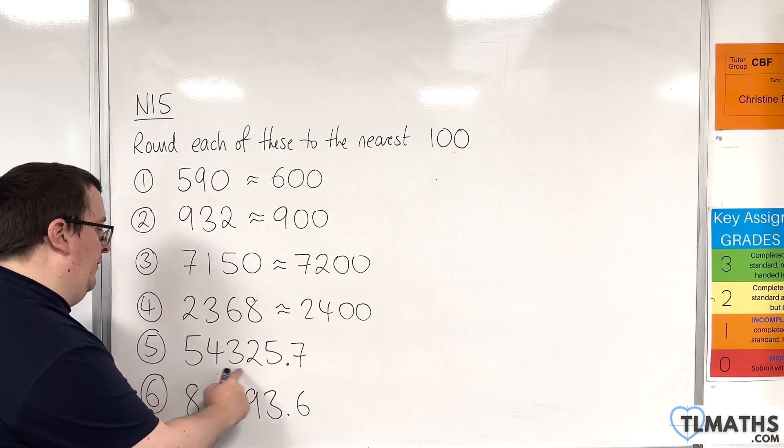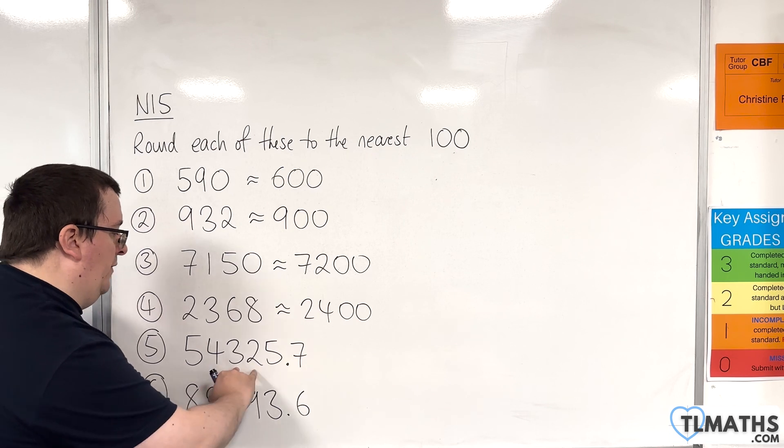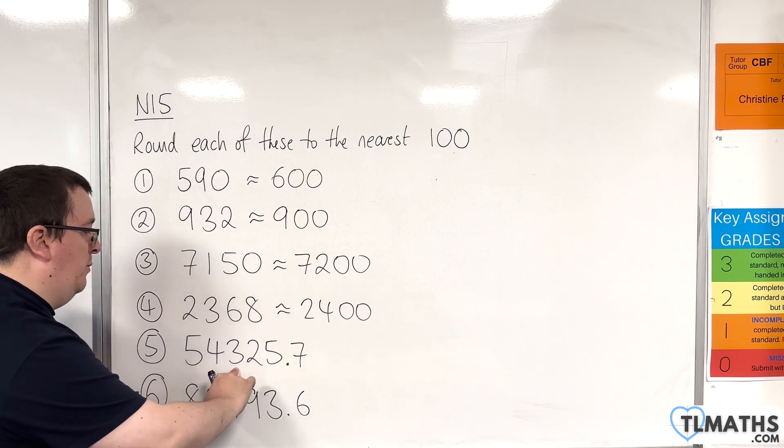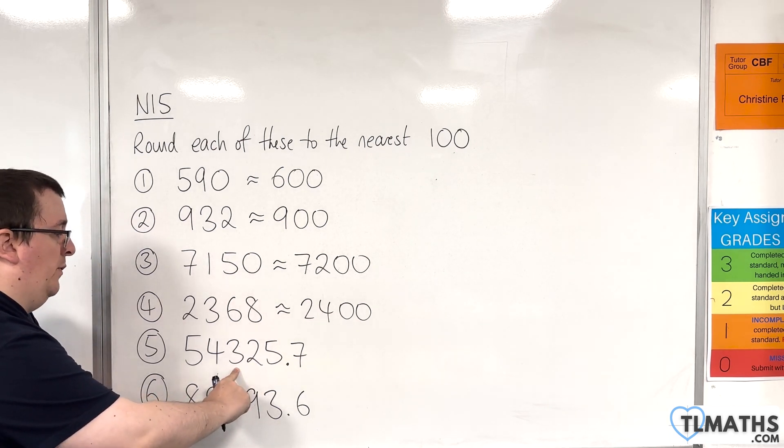Now for this one, the hundreds column is here. One to the right is less than 5, so we round this down, so that's 54,300.